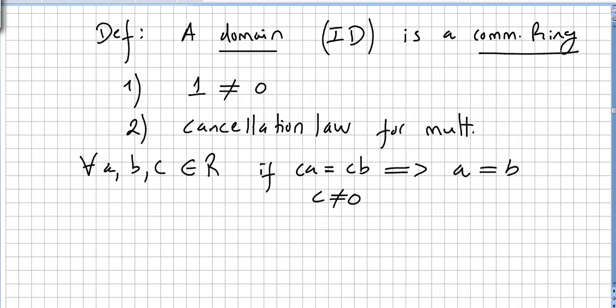In a commutative ring, if the identities are different, and the cancellation law for multiplication holds, then we have an integral domain, or we are going to call it a domain.